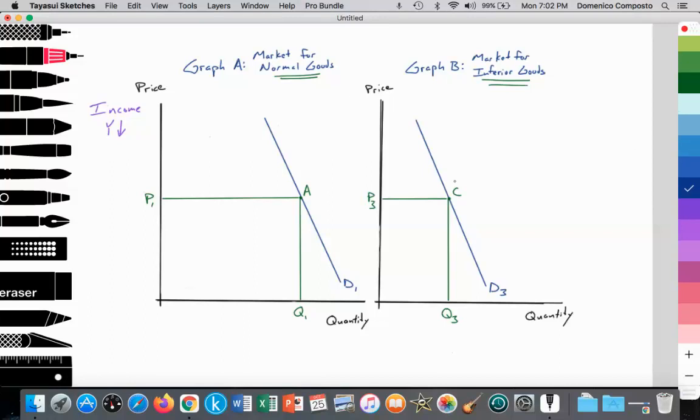What happens to demand for normal goods? Demand, we would expect, would fall. If households are generating less income, they will not be able to afford the higher quality normal goods. So demand should, in theory, decrease for the normal good from D1 to D2.